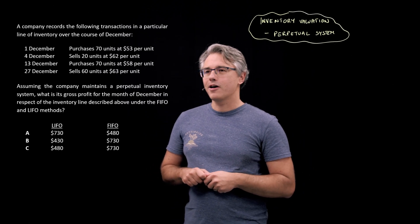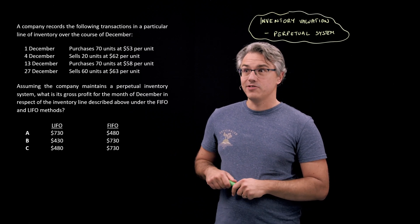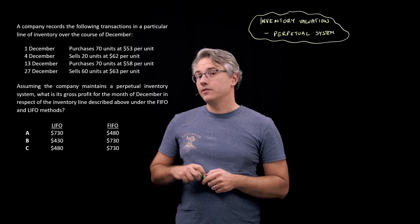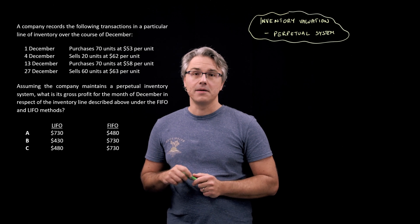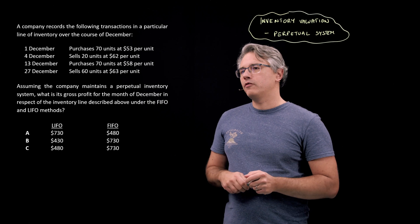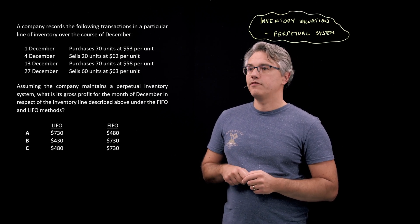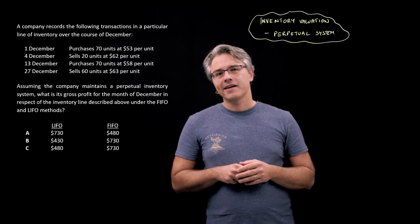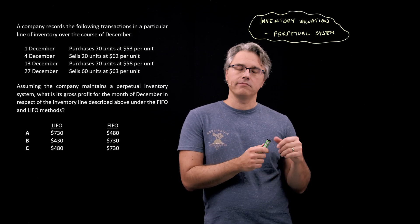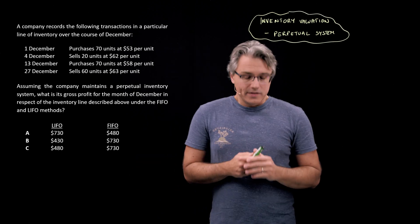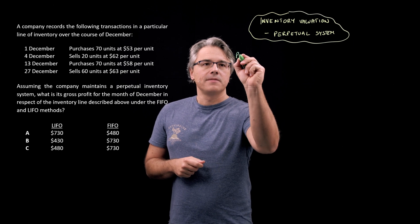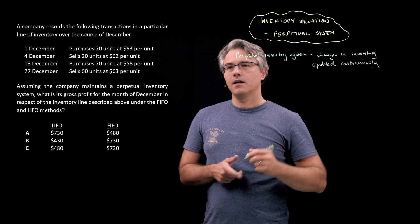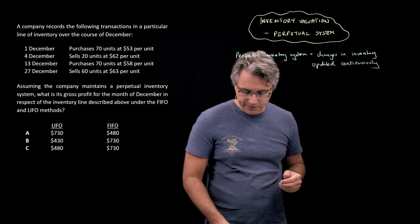This is the question we're going to have a go at. If you watched the previous three videos from this series, you'll know this scenario by now. We've got a company that over the course of December has been making certain purchases and sales within a single line of inventory. The difference this time is that we're assuming the company maintains a perpetual inventory system. We're being asked for its gross profit for the month of December under both FIFO and LIFO. A perpetual inventory system implies that changes in inventory are updated continuously, and not just at the end of the period, like at the end of the month.